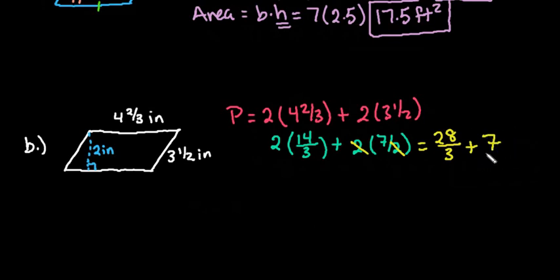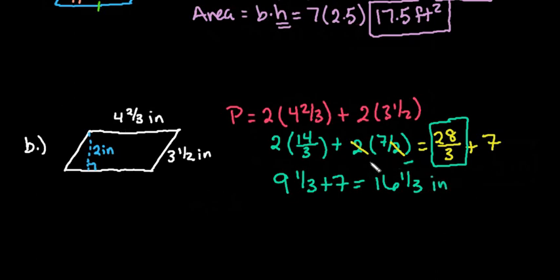You have a couple choices here. I could turn the 7 into 21 thirds and add the 21 plus the 28 together, or to make it easier I can convert this back to a mixed number. We can say that 3 goes into 28 nine times. 9 times 3 is 27 so we would have a remainder of 1 third plus 7, which ends up giving us 16 and 1 third inches.